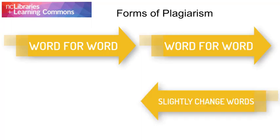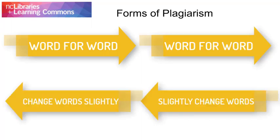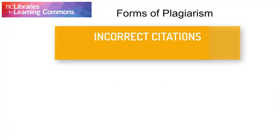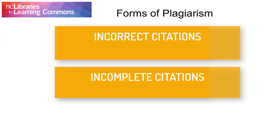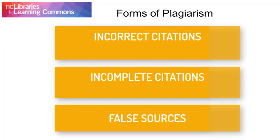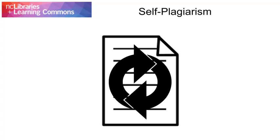There are many different forms of plagiarism. Some are obvious — for example, copying another person's work word for word, or changing the words slightly and including it in your own paper without providing a credit to the original. Providing incorrect or incomplete citations or citing false sources are also forms of plagiarism. You can even plagiarize your own work if you resubmit an assignment you created for a different class. The purpose of doing a research assignment is to come up with new ideas. You can build on your ideas, but you need to cite the original source.